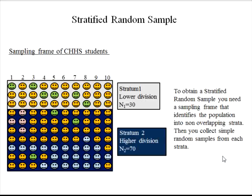In our example, we have lower division and higher division CHHS students. The sampling frame identifies which students are lower division and which are higher division. 30 of them are lower division — that's stratum one. And 70 in the population are higher division — stratum two.